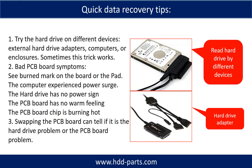There are some simple ways to recover data from a hard drive. One of them is to try to read the hard drive by different devices, like different external hard drive adapters, computers, or enclosures — because different devices use different ways to read a hard drive, and sometimes this trick works. Another way is swapping the hard drive PCB board. Swapping the PCB board can fix problems caused by the PCB board, and it is way cheaper than sending the hard drive to a data recovery firm.